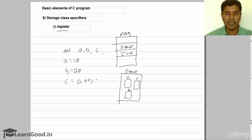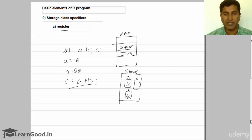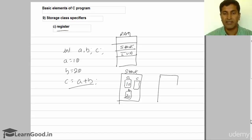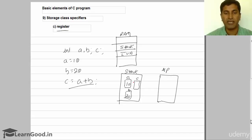So when you give c equals to a plus b, how exactly does this expression get evaluated? The values of a and b — let's say 10 and 20 — are present inside random access memory. With those values, the evaluation doesn't happen directly there. All evaluation takes place inside a processor, called a microprocessor, where all the evaluation takes place.